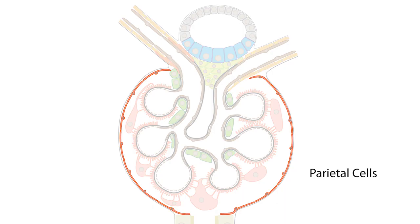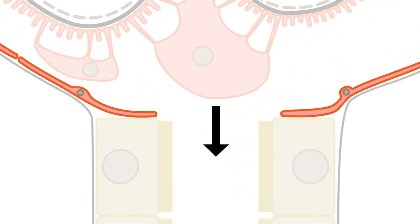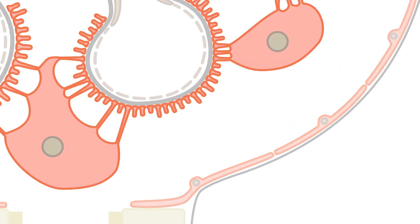Once formed, the ultrafiltrate drains directly into the tubule. Podocytes are also specialized epithelial cells and are located in the Bowman space.